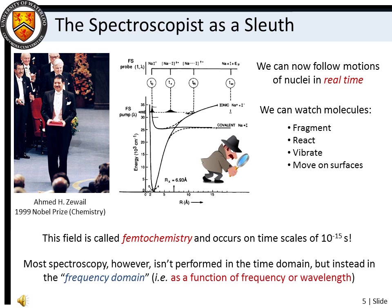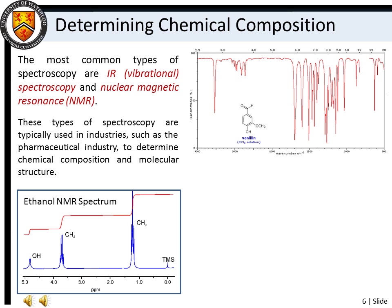Most spectroscopy, however, isn't performed in the time domain, but instead in the frequency domain. Still, the most common use of spectroscopy for chemistry students is in determining chemical composition. Usually, you will employ infrared, or IR spectroscopy, and/or nuclear magnetic resonance spectroscopy to confirm that you have prepared the correct product, or to deduce the identity of an unknown chemical sample.